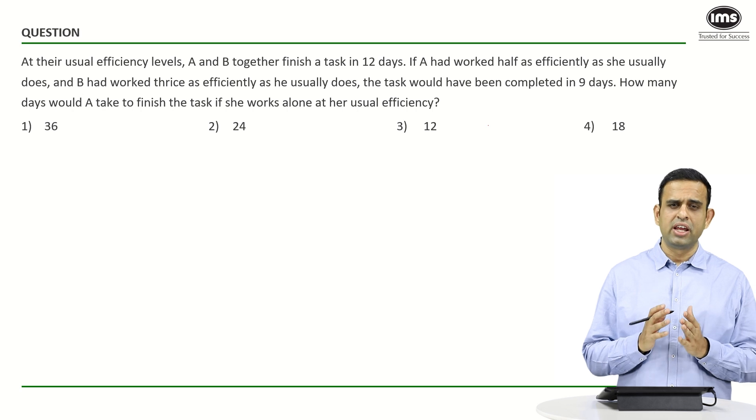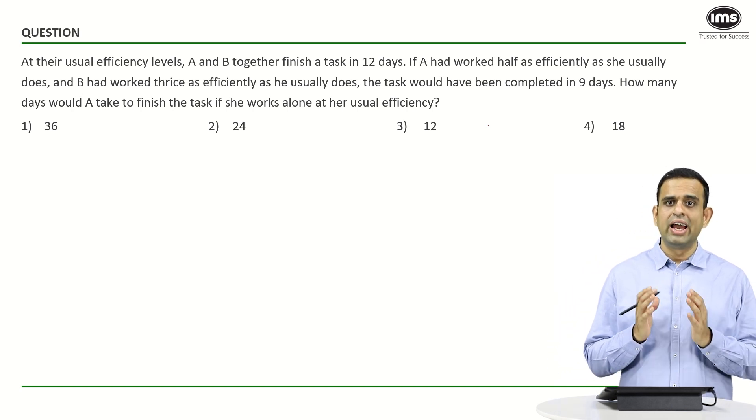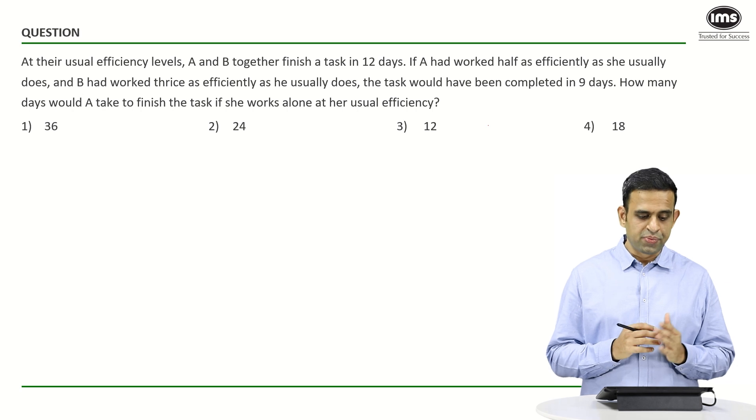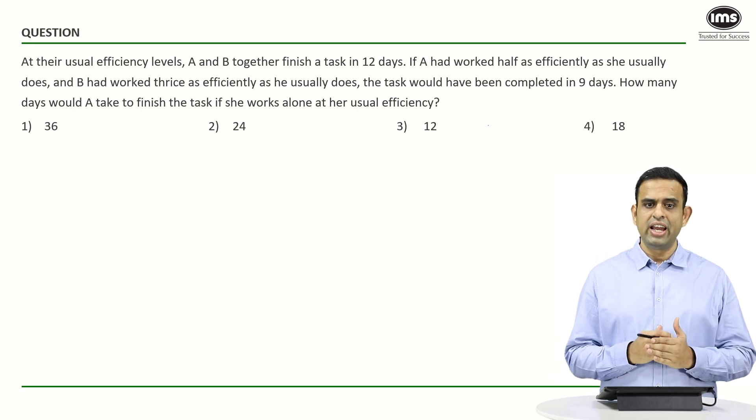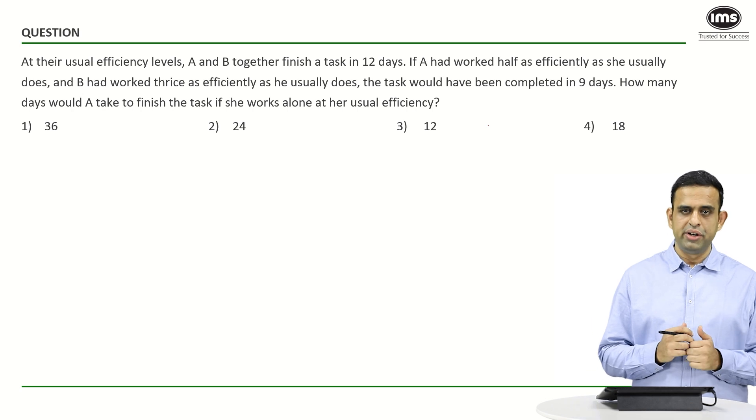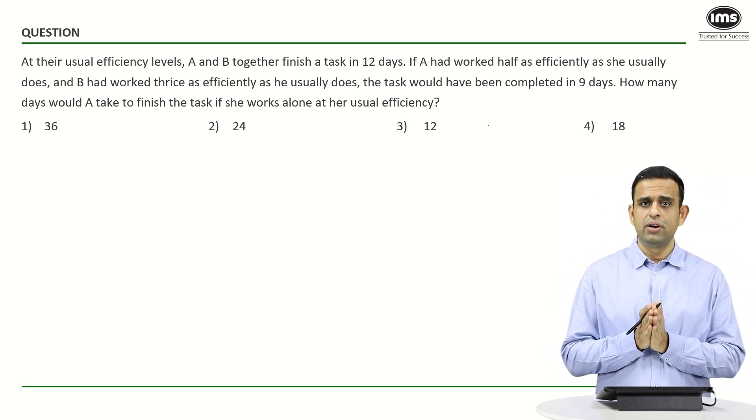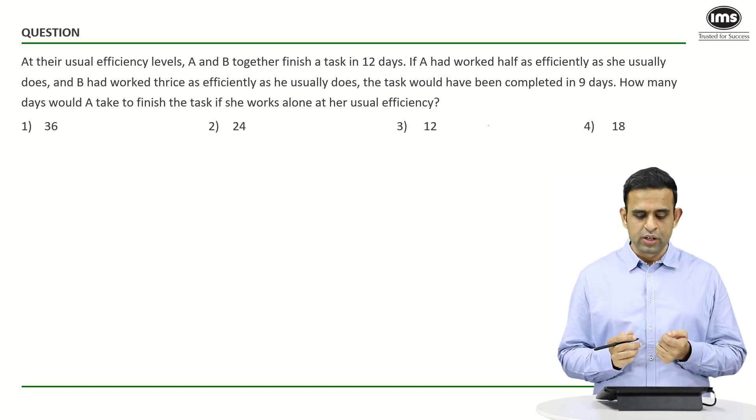Today's sum is based on the concept of time and work. I will show you two approaches for this particular question. At the usual efficiency level, A and B together completed the task in 12 days.